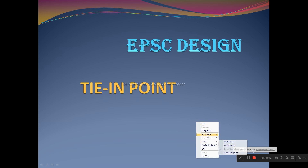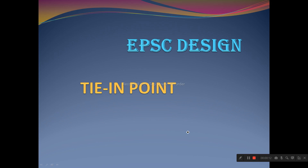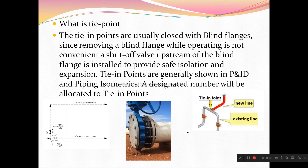Hello, today we will see tie points. What is a tie point, what exactly, where we use a tie point? Tie points are usually closed with blind flanges, since removing a blind flange while operating is not convenient.